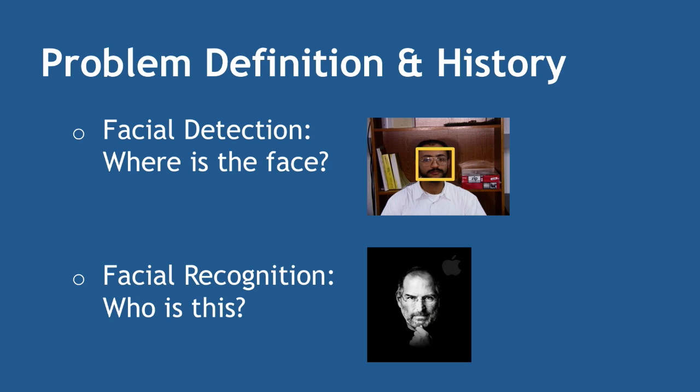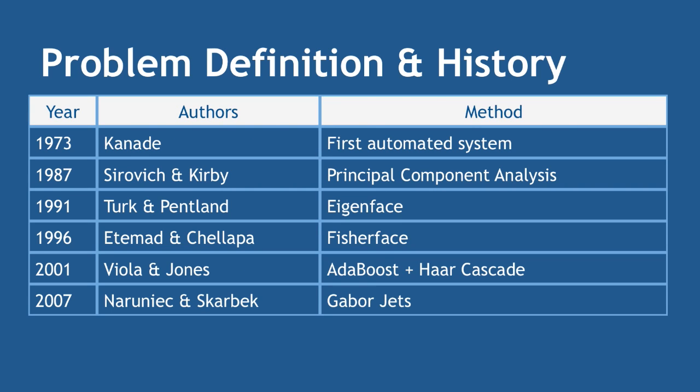There are two things to this. Facial detection answers the question 'where's the face?' — so in a photograph with many objects like a zip drive, books, and a body, we're trying to extract just the segment representing the face. Then facial recognition answers 'who is this?' This presentation is entirely focused on that first part: given an image, find the face and determine where it is. Future parts will delve into recognition techniques.